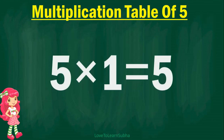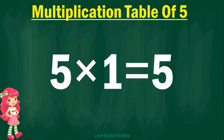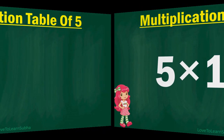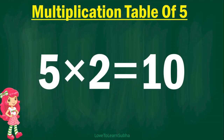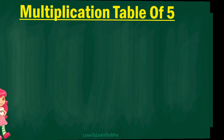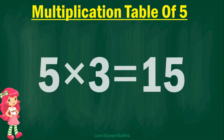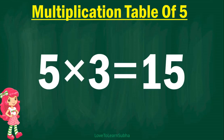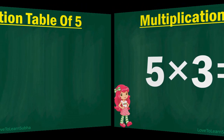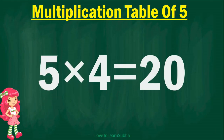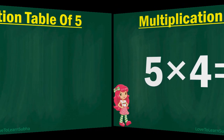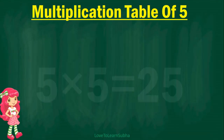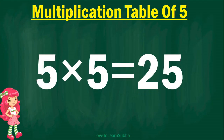5 ones are 5. 5 2's are 10. 5 3's are 15. 5 4's are 20. 5 5's are 25.